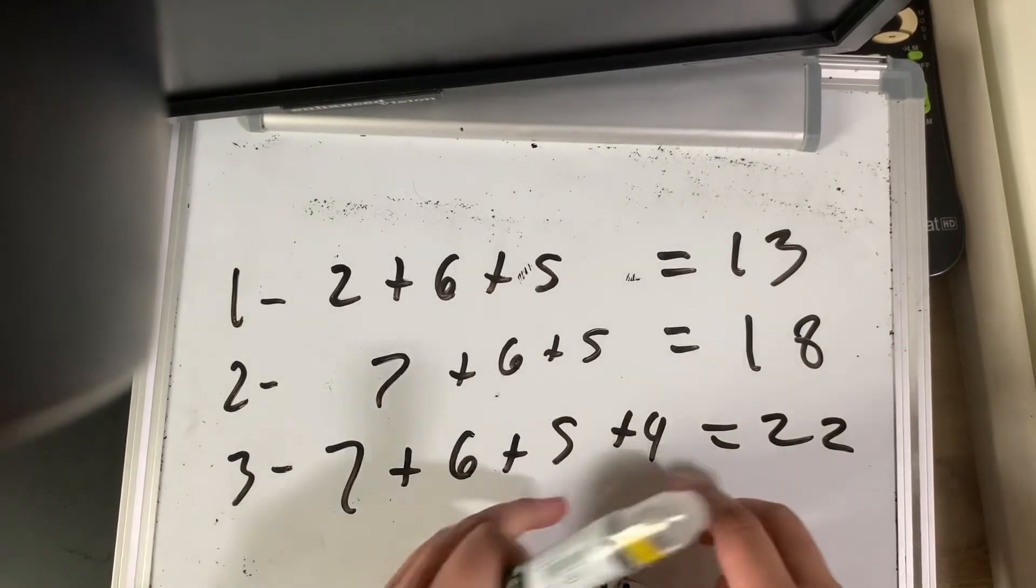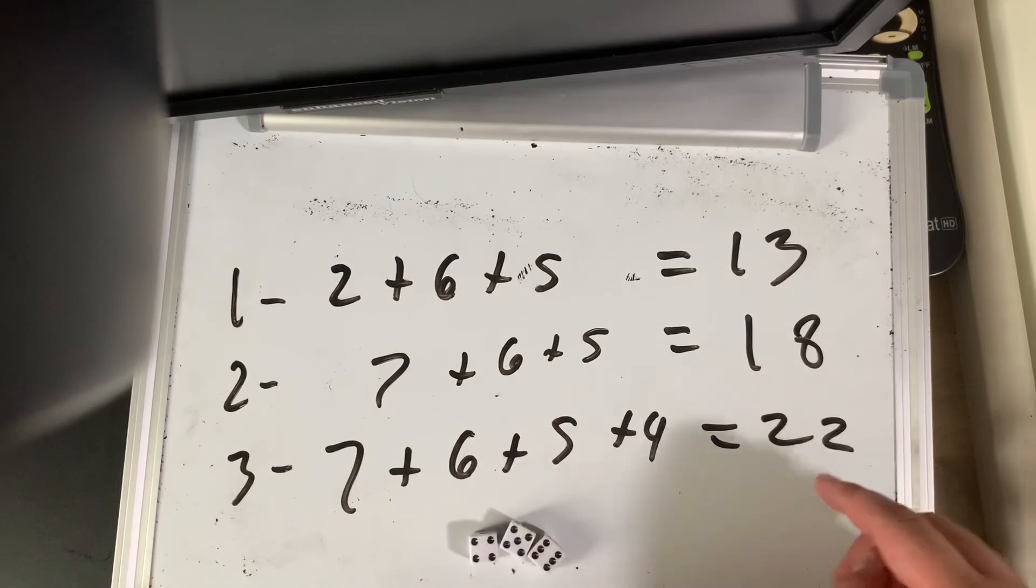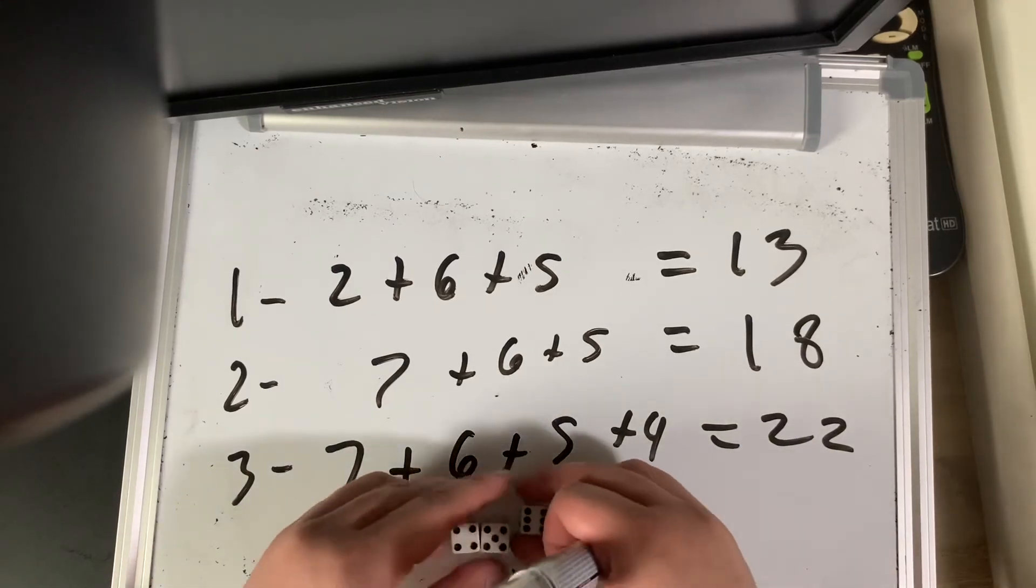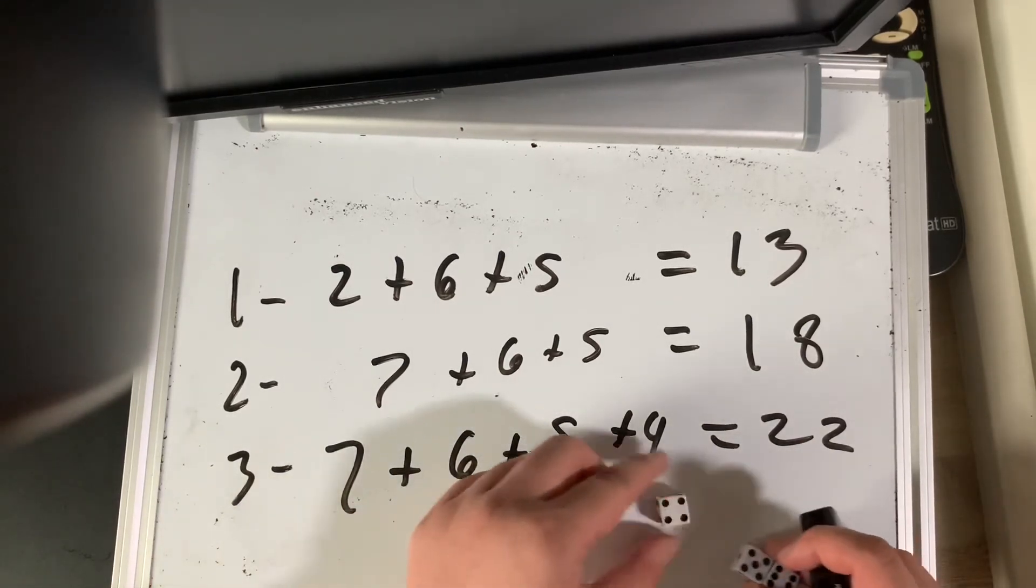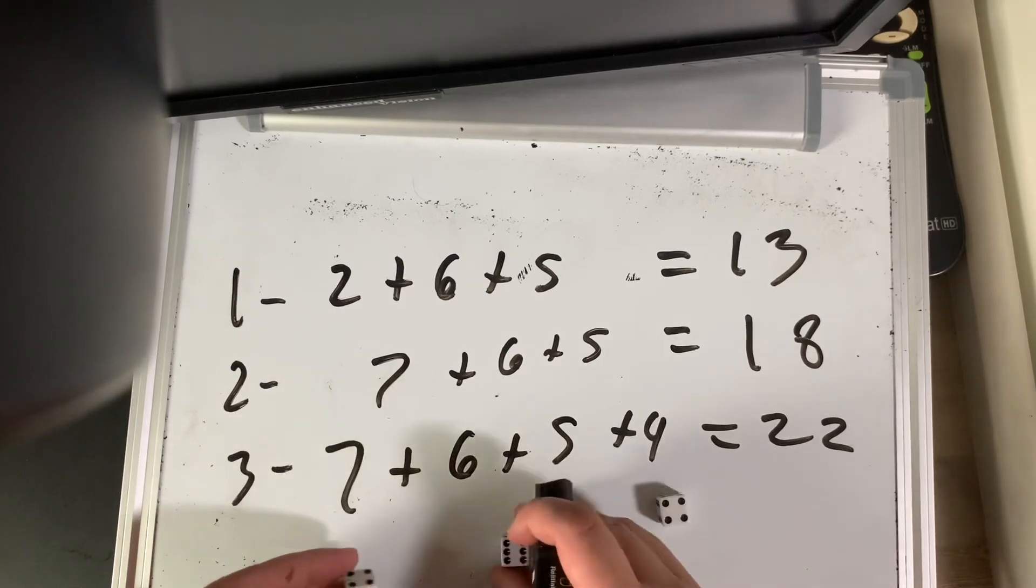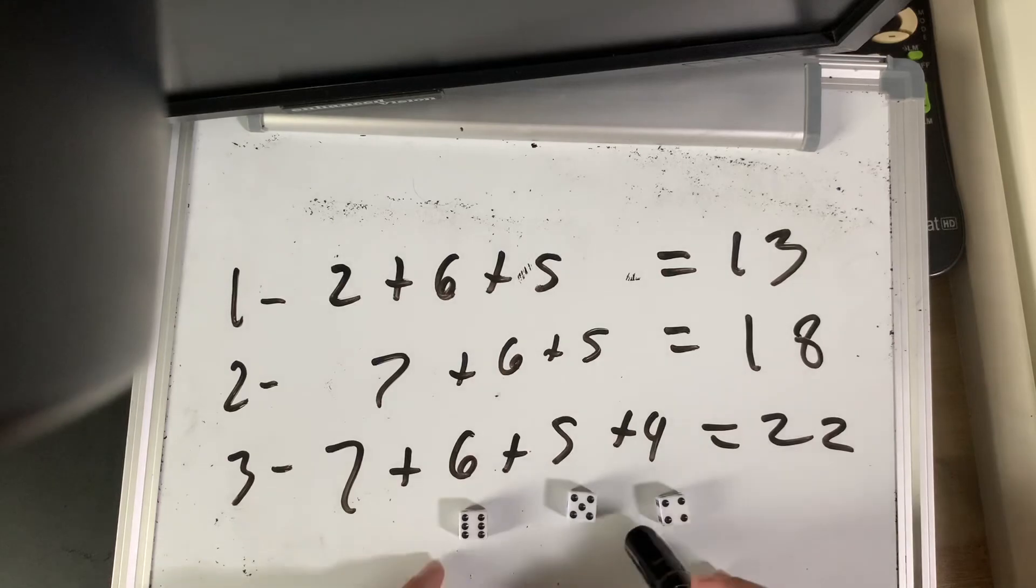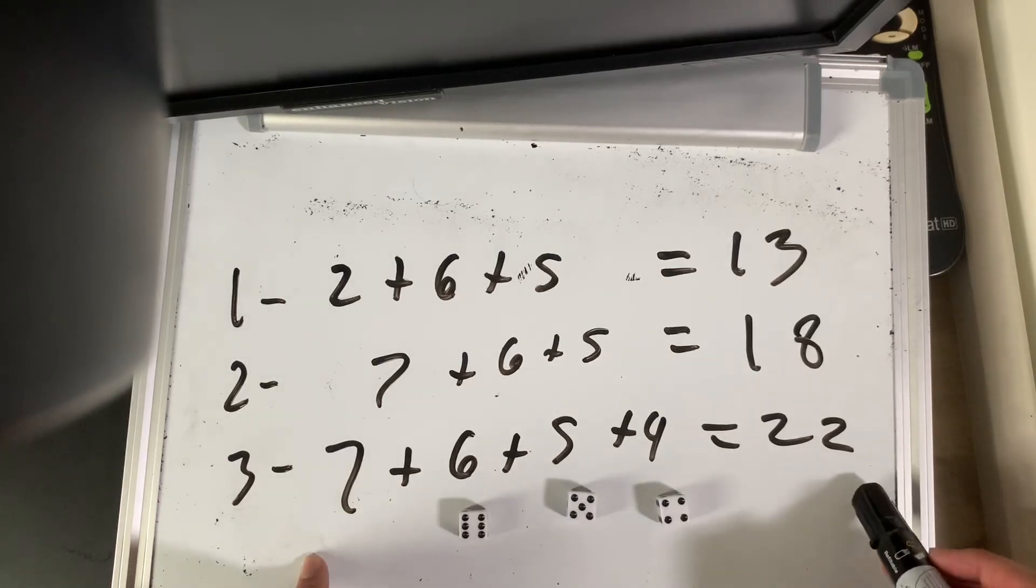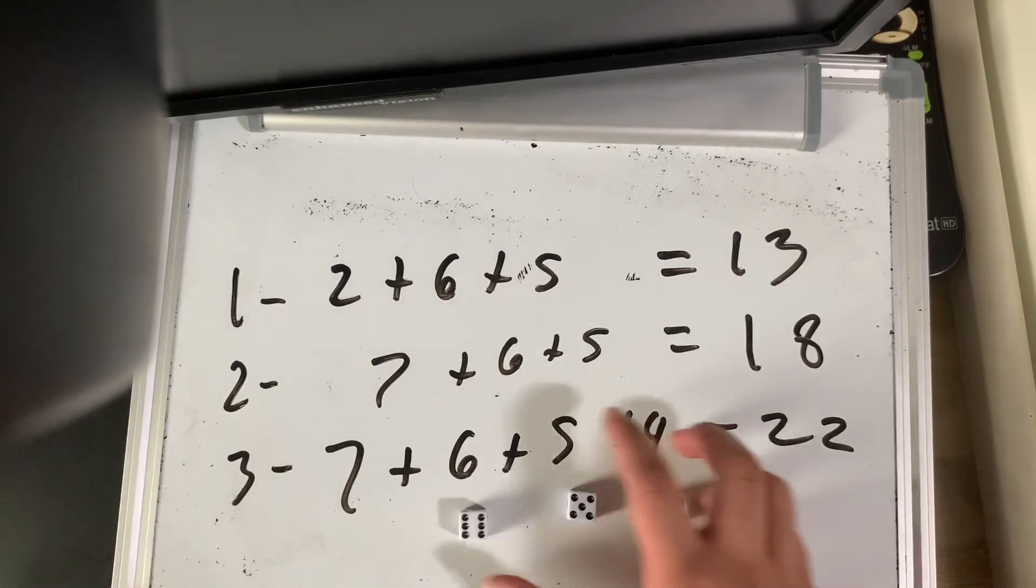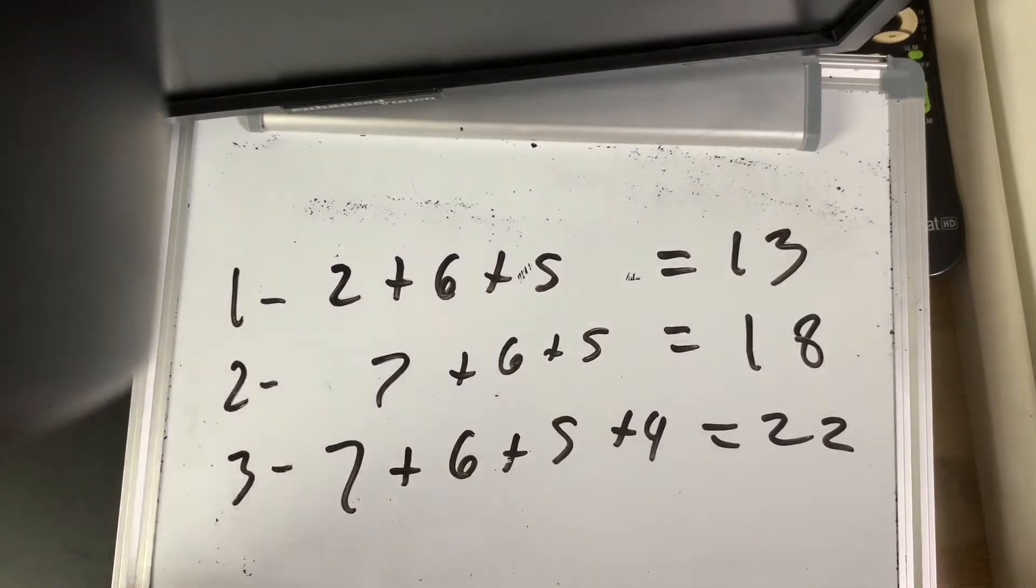And then how can the guesser find out it's 22? Look at the 3 dice over here. The 3 dice is 4 plus 6 plus 5. All it has to do is to add 7 to get 22. That is the arithmetic behind it.